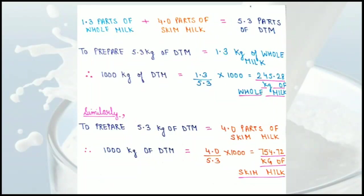So 245.28 kg of whole milk and 754.72 kg of skim milk, when mixed, give 1000 kg of double toned milk. These questions are very important for entrance exams, especially MSc entrance and NET exams. I hope this has cleared your concepts.